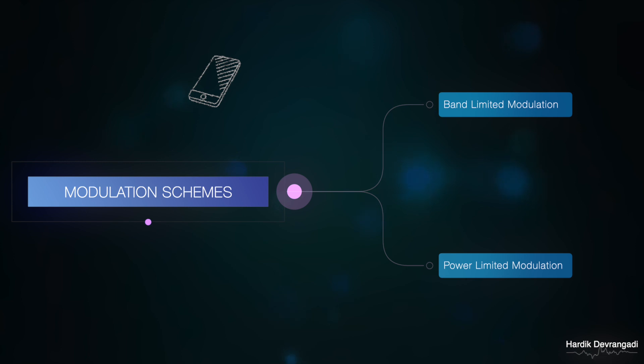The power limited modulation scheme is used when the power for transmission is limited. For example, in satellite communication, power available for transmission is very less, around 15 to 20 watts, but there is no limitation on the bandwidth available for transmission.